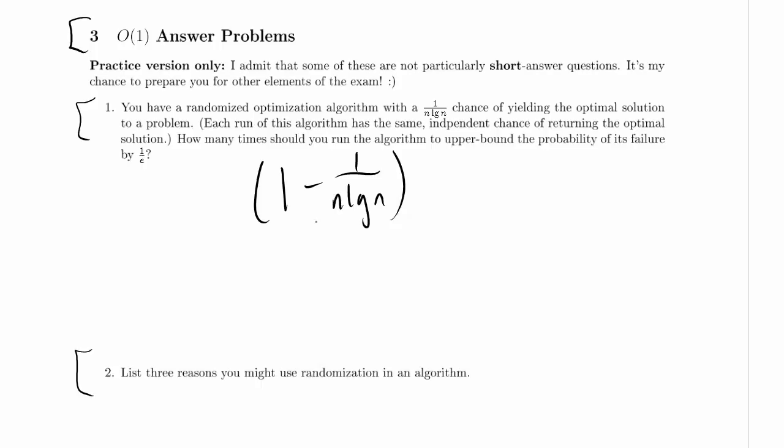To fail if we run it twice it has to fail both times because if it succeeds either time we'll use that better solution. Since this is an optimization problem typically we can tell which of two solutions is better and we'll just pick the better one. If we find the optimal solution we will always pick it and so we'll always end up with the optimal solution if we get it at any moment. So if we run this twice our probability of failure is 1 minus 1 over n log n times 1 minus 1 over n log n, which is 1 minus 1 over n log n squared.